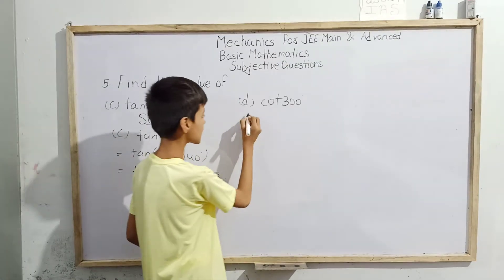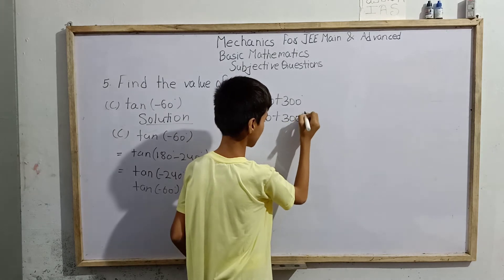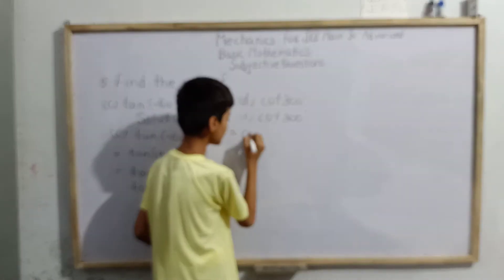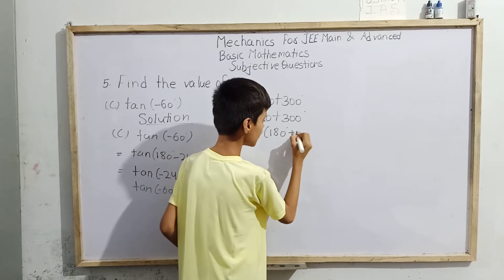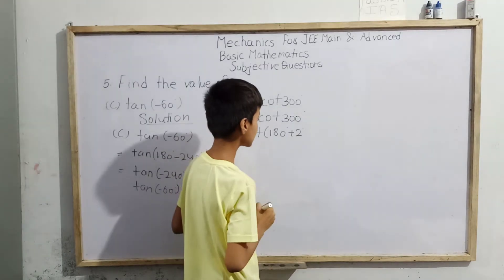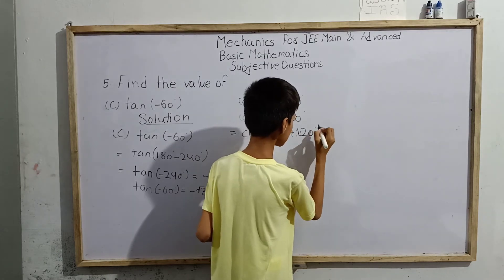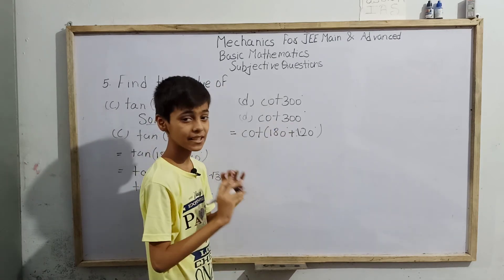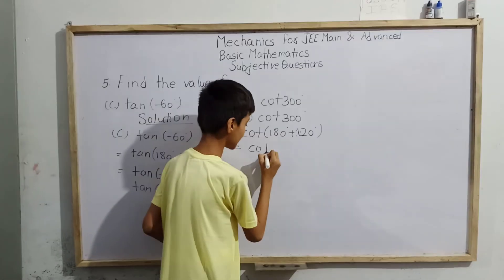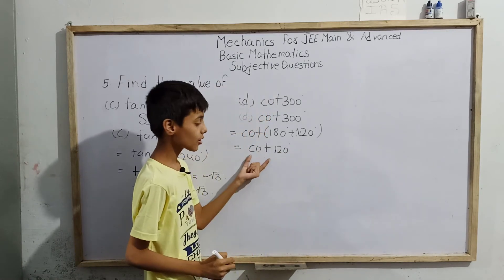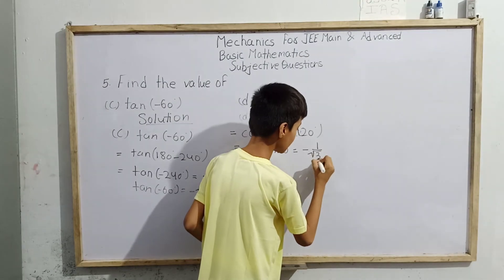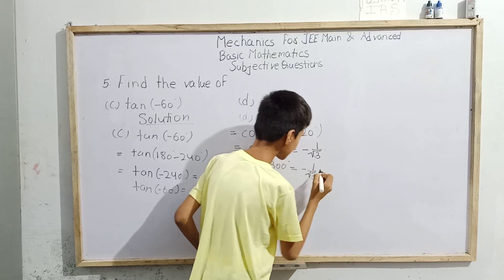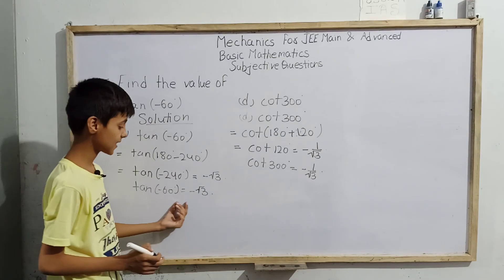Now for part d: cot(300°). How can we write cot(300°) in terms of 180°? We write it as cot(180° + 120°), which equals cot(300°). Now cot(180°) is undefined, so we take only cot(120°). The value of cot(120°) is -1/√3, so cot(300°) also equals -1/√3.